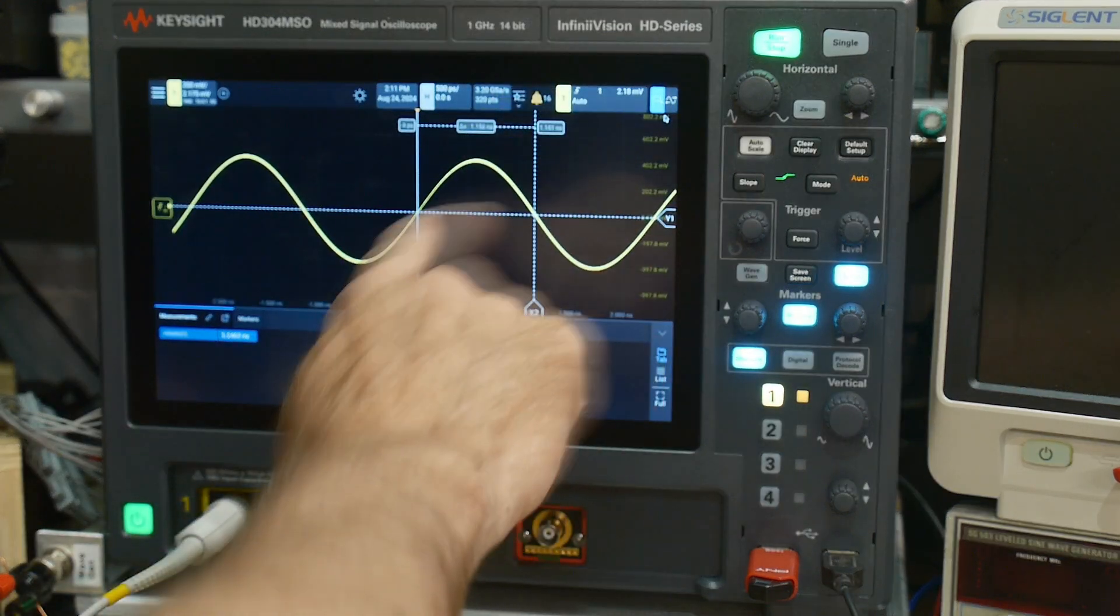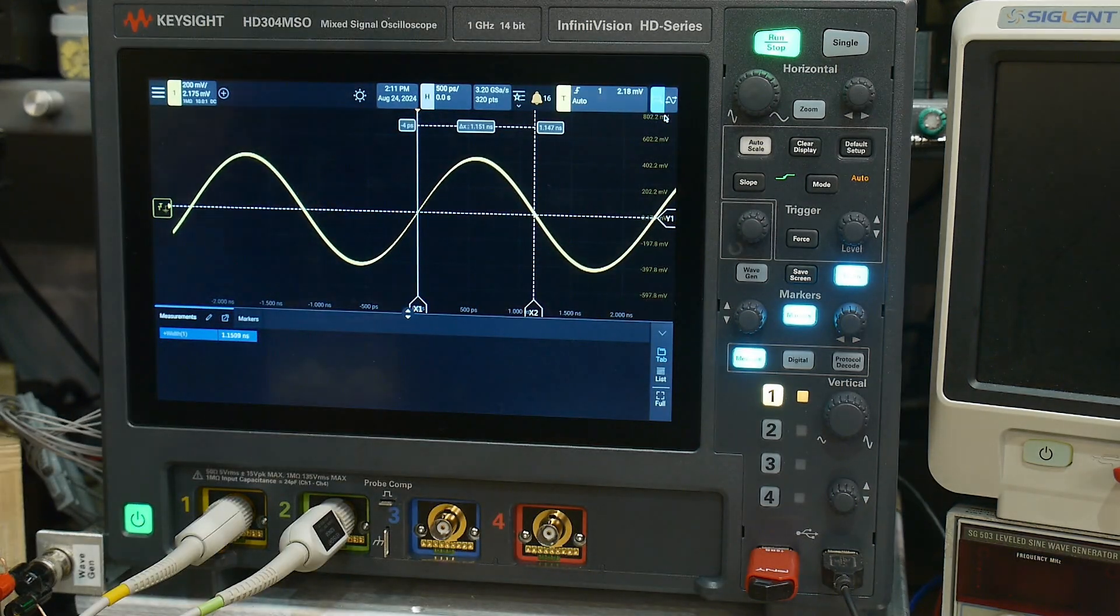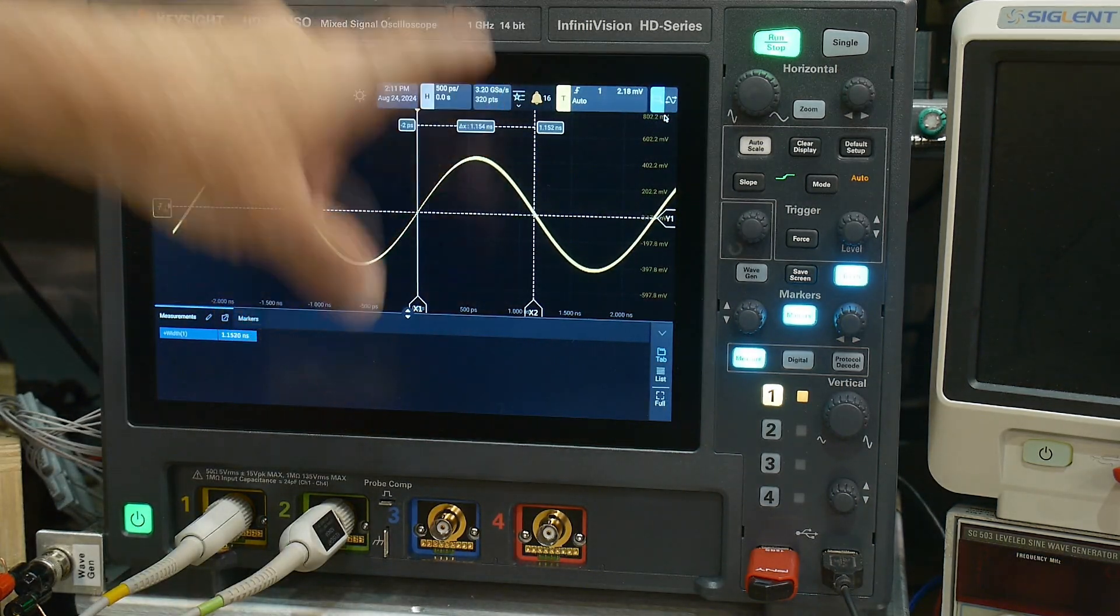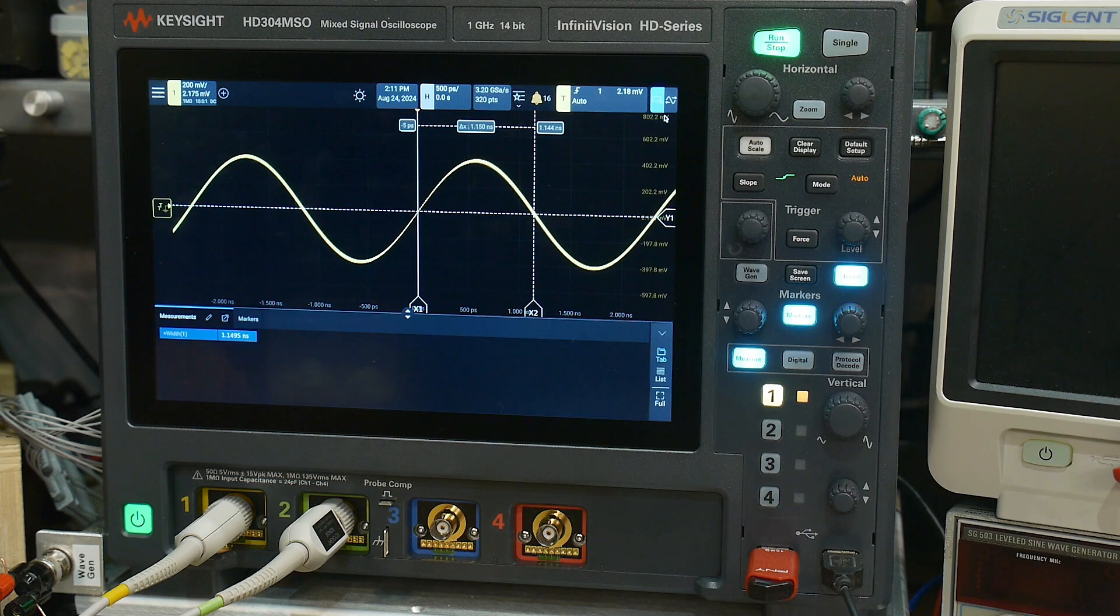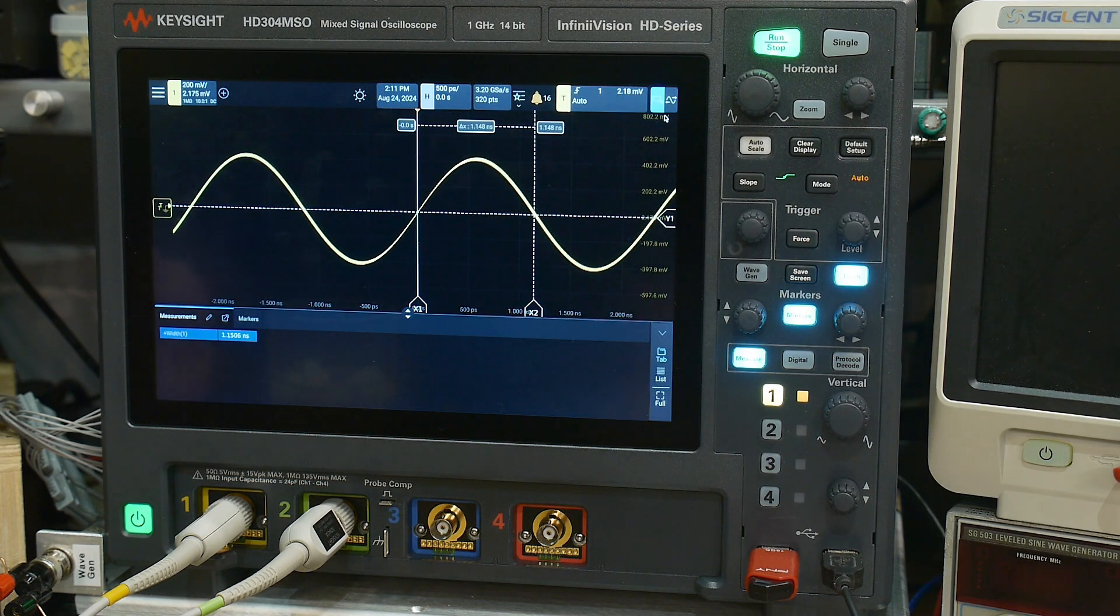All right, there we go. We're going to measure that pulse width and right now it's about 1.15 nanoseconds, but it's jittering.